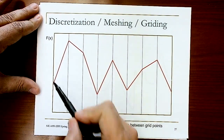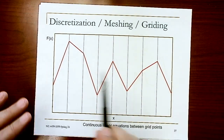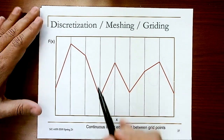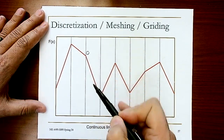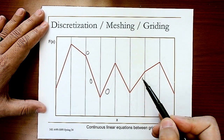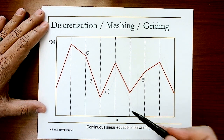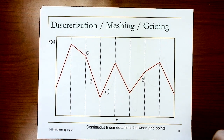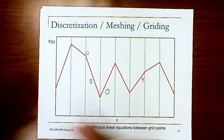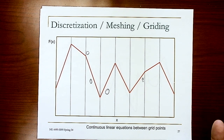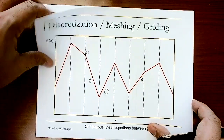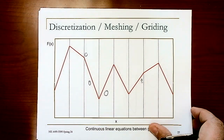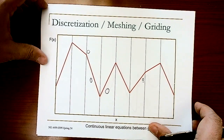Finite element is much better compared to finite difference because it gives you data all over the domain using the continuous piecewise linear equations between grid points, or data within subdomains as discrete functions. So finite element really improves the prediction and approximation of the continuous domain.